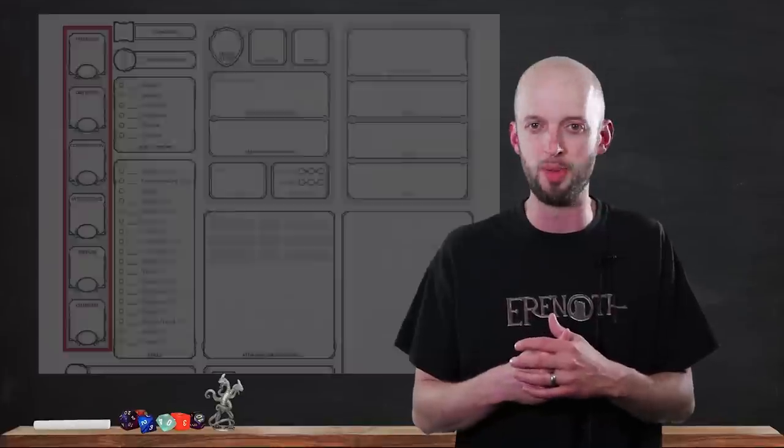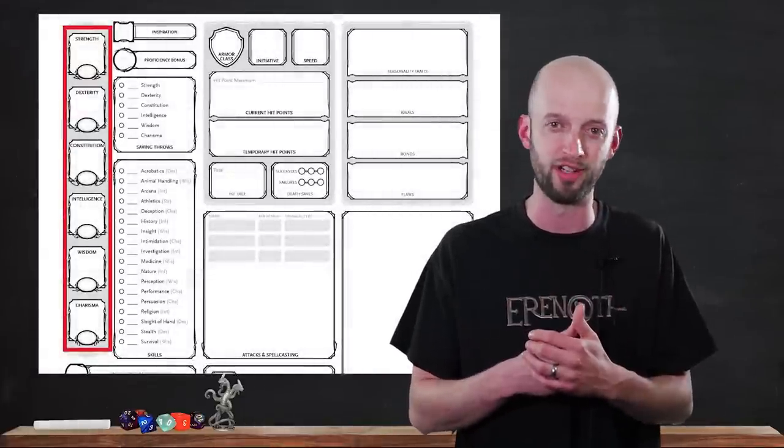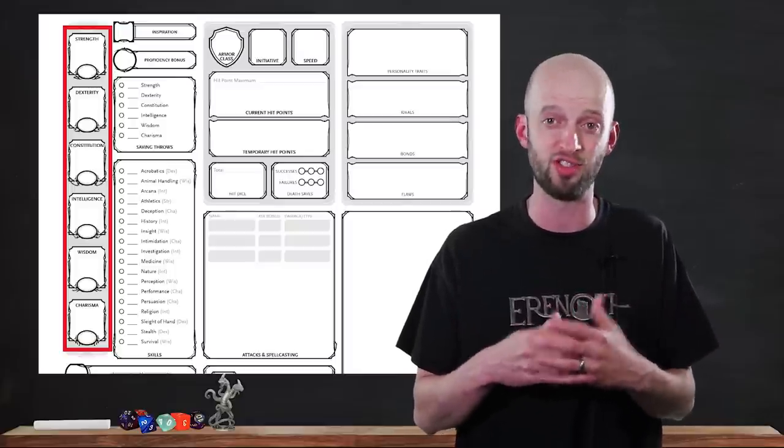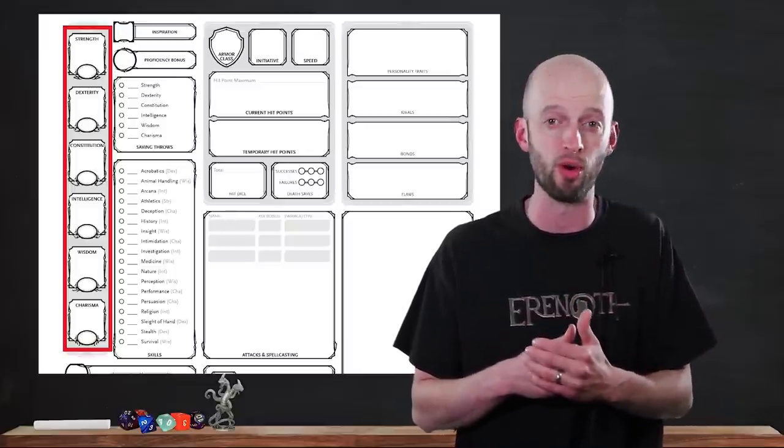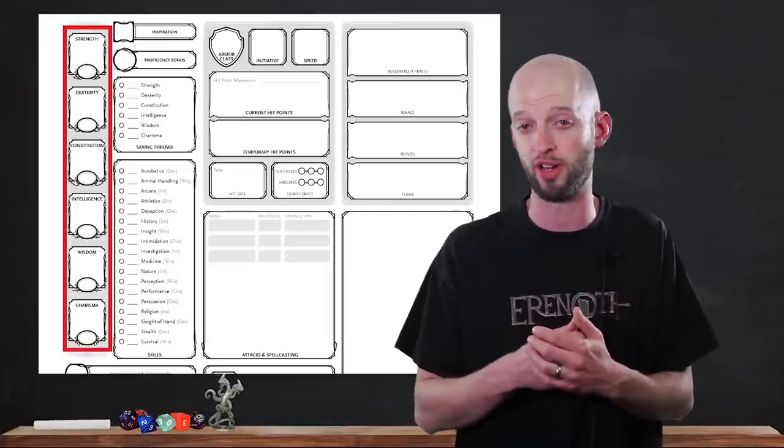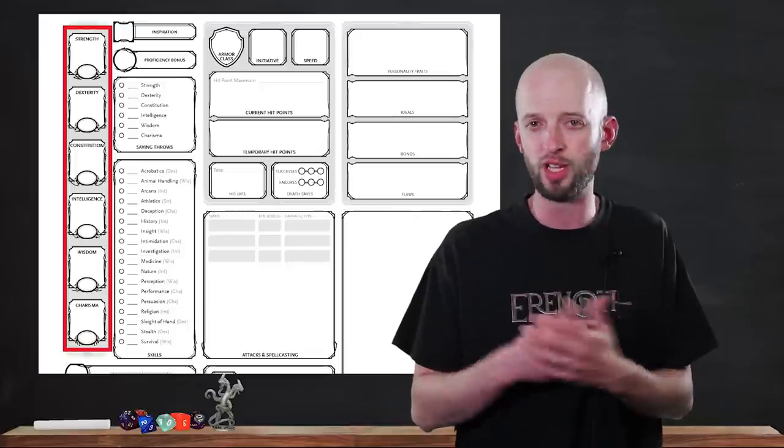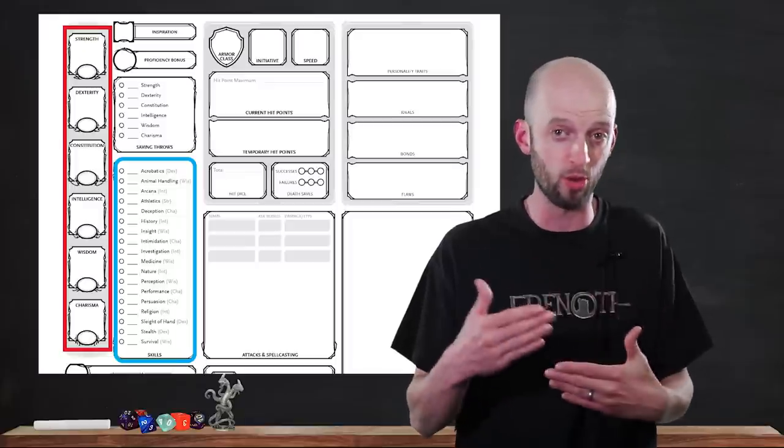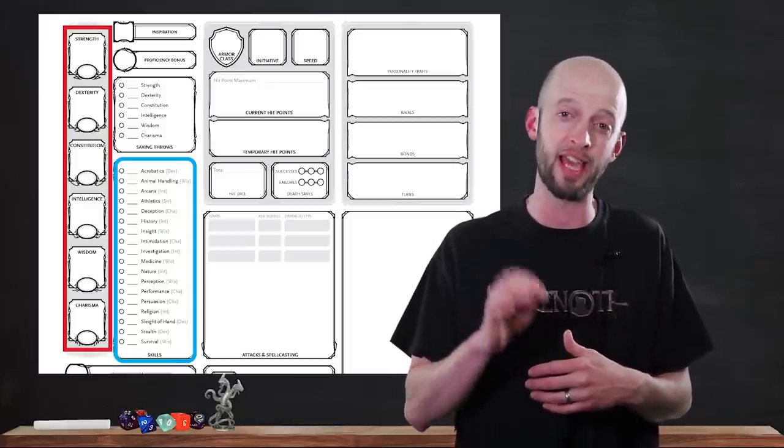Our outline will be the six abilities in the order they are found on the character sheet. These abilities have been around since the very first edition of Dungeons & Dragons, sold way back in 1974. And they're the basis for the ability scores in all sorts of other products, even today. As we cover each ability, I'll also describe each skill associated with it, and some of the other ways the ability score is used in the game.